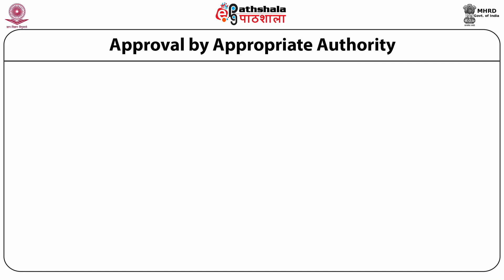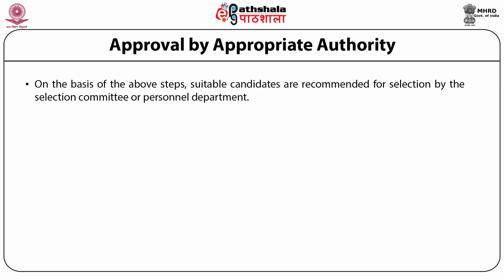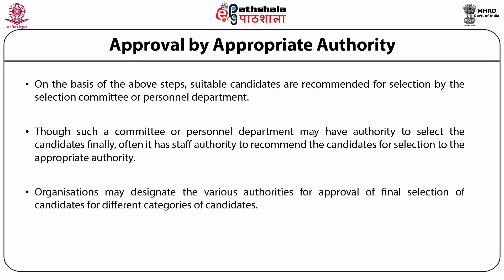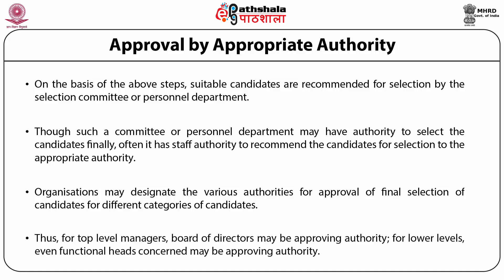After physical examination, the next step is approval by the appropriate authority. On the basis of all the previous steps, suitable candidates are recommended for selection by the selection committee or the personnel department. The personnel department may have authority to select the candidate finally, or it may have staff authority to recommend the candidate to the appropriate authority. Organizations designate various authorities for approval of final selection — for top-level managers, the board of directors may be the approving authority, while for lower-level recruitments, functional heads concerned may be the approving authority.